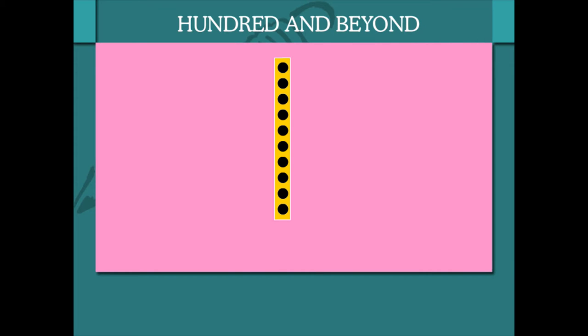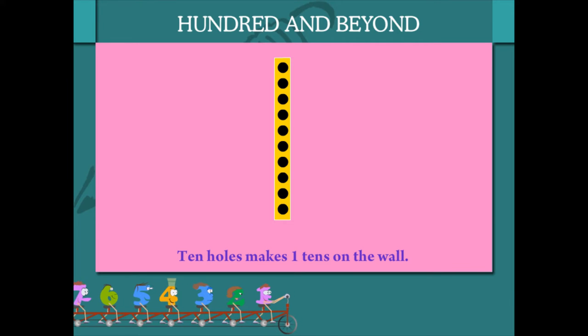100 and beyond. Here are 10 holes on the wall. A group of 10 holes makes 1 tens.